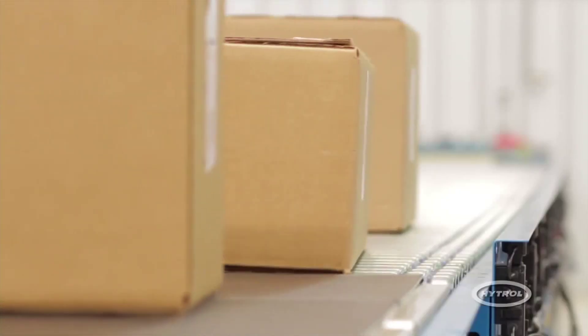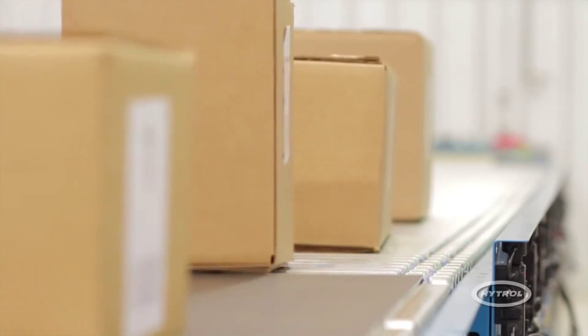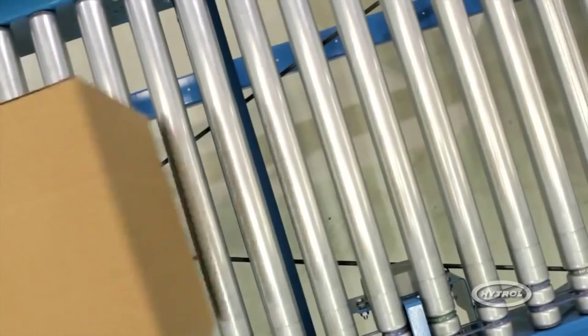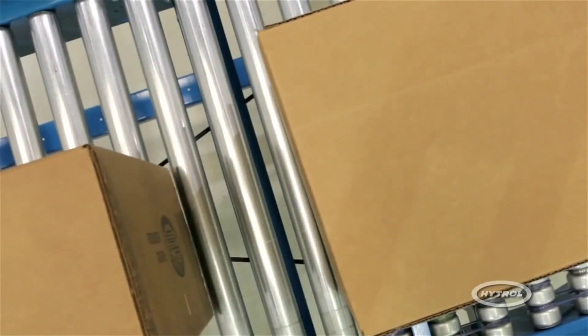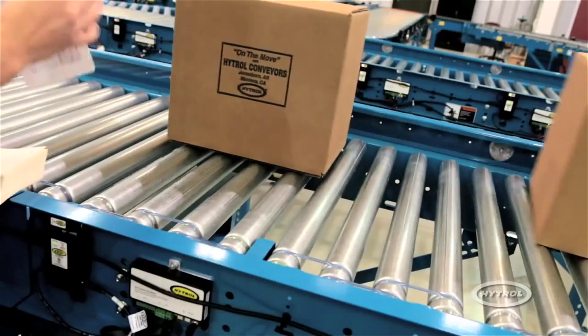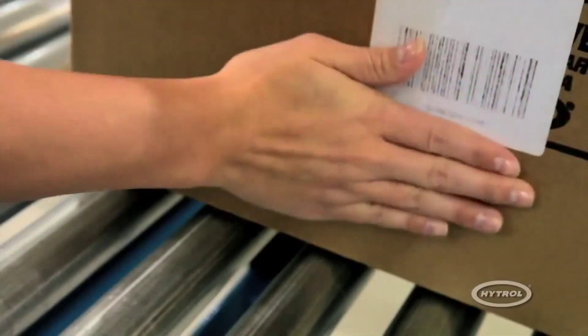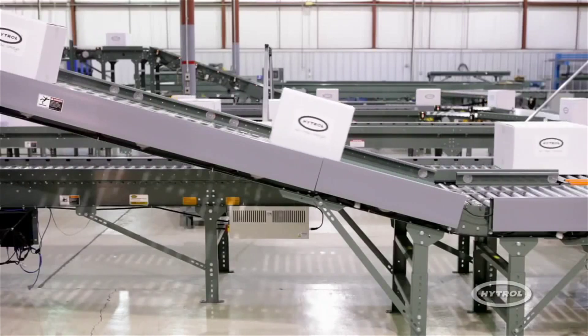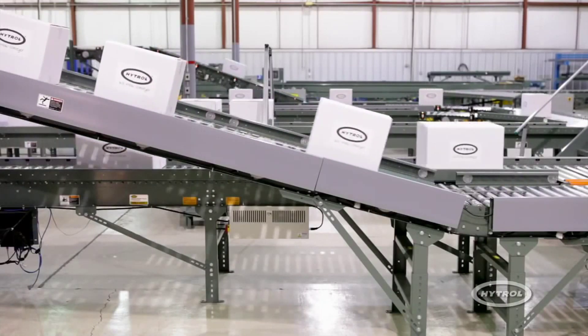Zero-pressure accumulation is the primary function of the EasyLogic system and is essential for controlling carton traffic in today's modern high-speed distribution centers. It is a must for assembly and inspection workstations or anywhere cartons must be efficiently stopped and accumulated prior to other system operations.